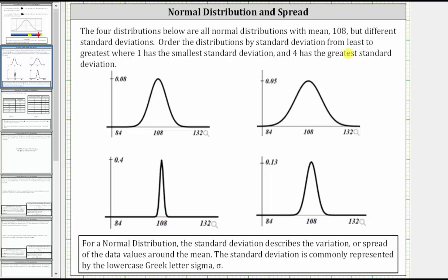For a normal distribution, the standard deviation describes the variation or spread of the data values around the mean. The larger the standard deviation, the larger the spread, or larger variation around the mean. The standard deviation is commonly represented by the lowercase Greek letter sigma.